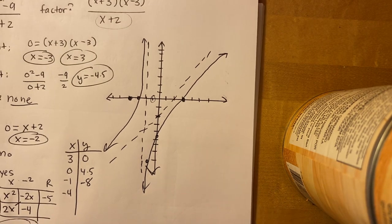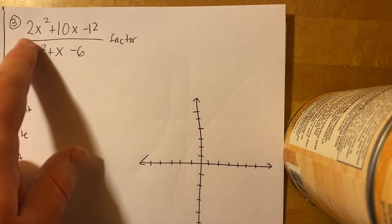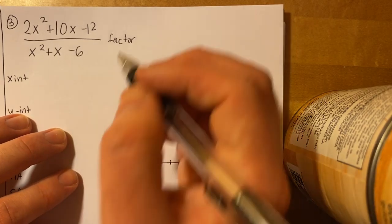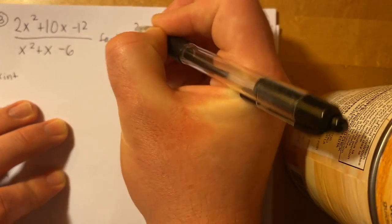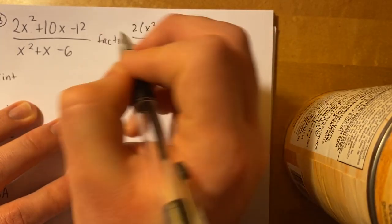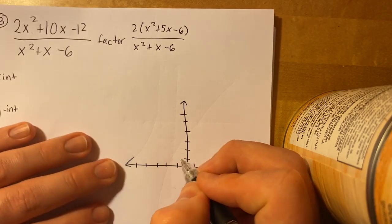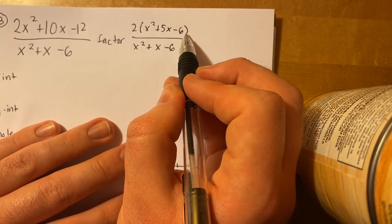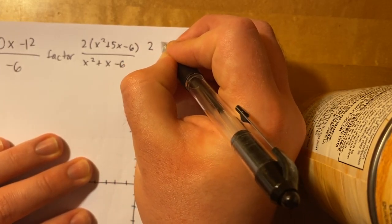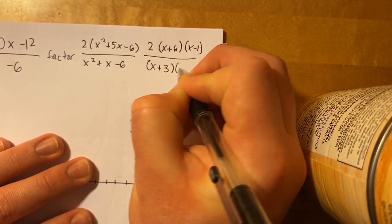We have one more — my favorite. The next example is (2x² + 10x − 12) over (x² + x − 6). First, factor it: I see a GCF of 2 in the numerator, giving 2(x² + 5x − 6). Factoring that trinomial: 2(x + 6)(x − 1). The denominator factors to (x + 3)(x − 2). Nothing cancels, so there are no holes.